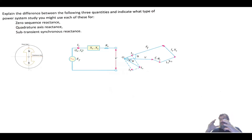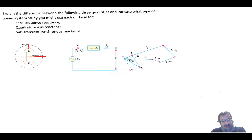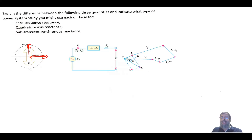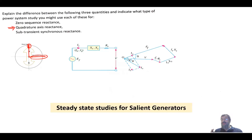The second type is the salient pole generator. In the salient pole structure, there are two different air gap distances: one along the direct axis and one along the quadrature axis, which is 90 degrees away. One gap is small and one is large. Because of this, we decompose the reactance into two separate reactances: the direct axis reactance xd and the quadrature axis reactance xq. This model is used in steady-state studies for salient pole generators.